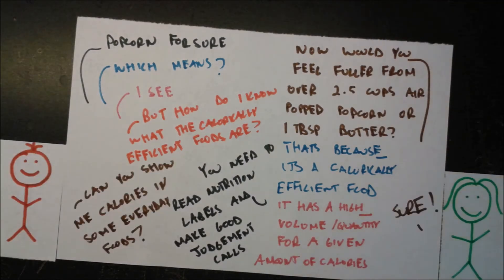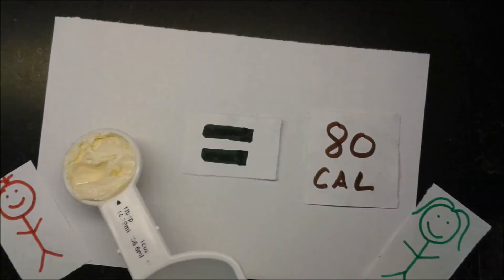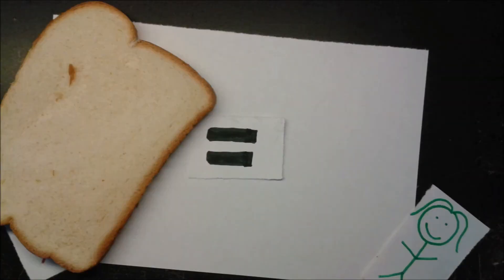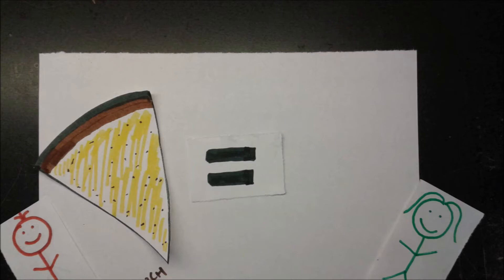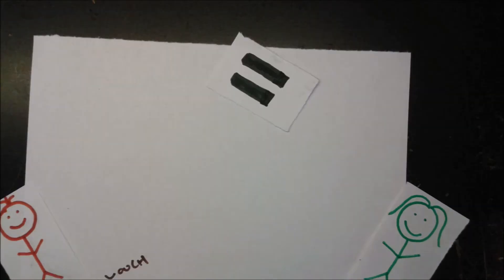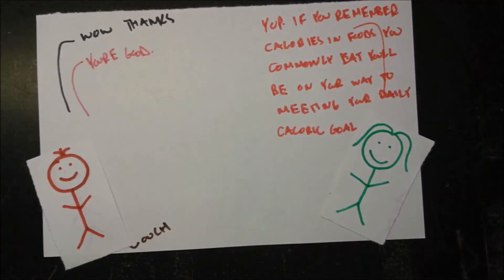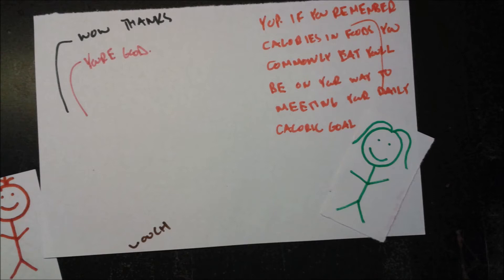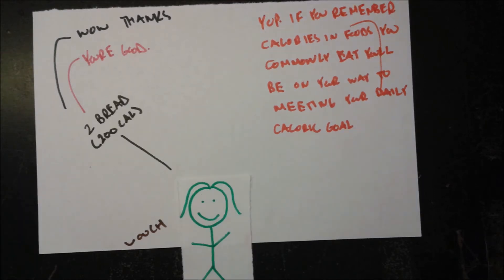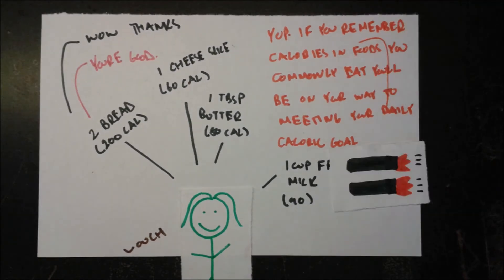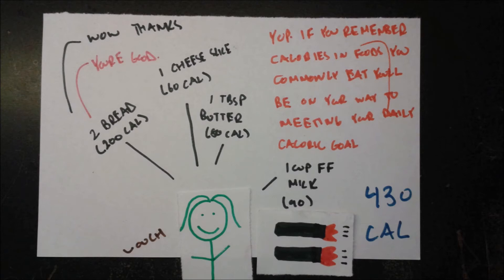Look at calories in everyday foods: an egg is 80 calories, the same as one tablespoon of butter. A cup of fat-free milk is 90 calories, a slice of cheese is 60, a slice of bread is 100, and a slice of cheese pizza is 280 calories. Tracking calories daily helps you meet your goal. For example, a grilled cheese sandwich with milk totals 430 calories: 200 for bread, 60 for cheese, 80 for butter, and 90 for milk.